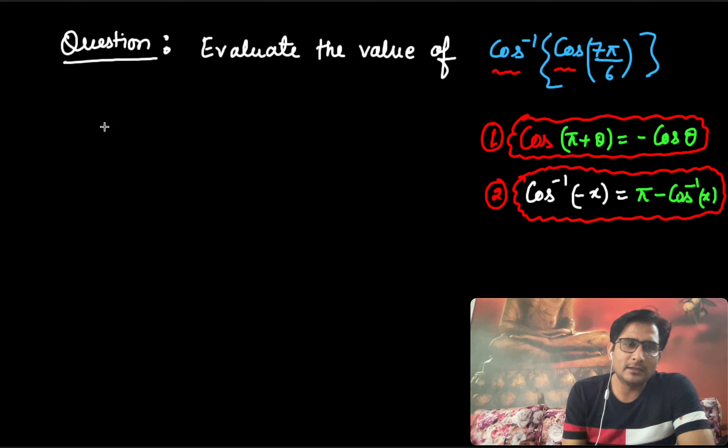So now let us take it. It is cos inverse cos 7π by 6, right? It is given.